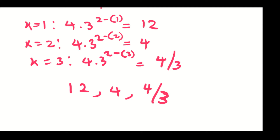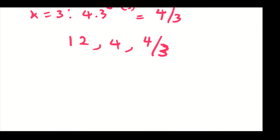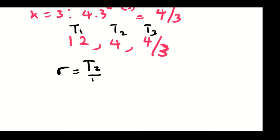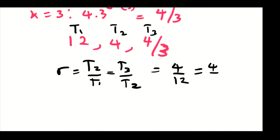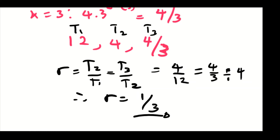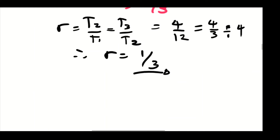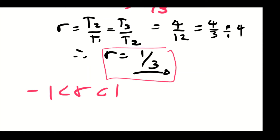To prove convergence, we need to find the common ratio of these terms. The ratio equals term two over term one, which must equal term three over term two. We find 4 over 12 equals 4/3 divided by 4, giving a ratio r of 1 over 3. For convergence, r must lie between minus 1 and 1. Since r equals 1 over 3, it lies in that range, so the series converges.